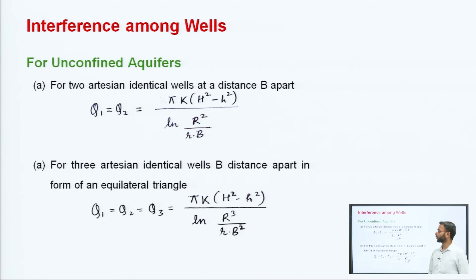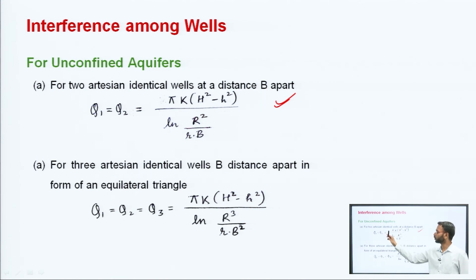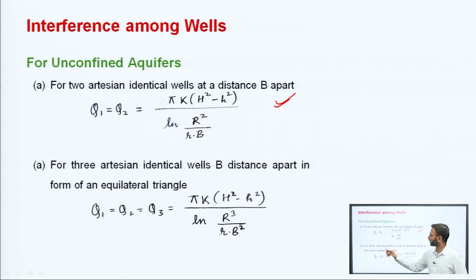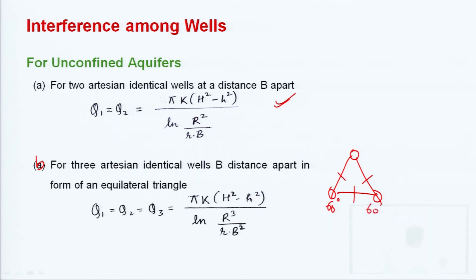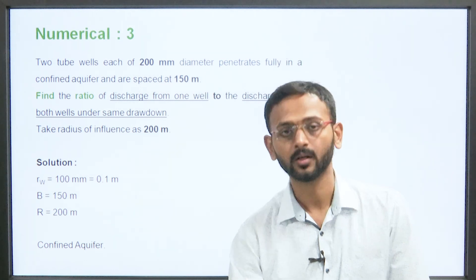Now let us talk about the unconfined aquifer. For two identical wells at distance b apart in an unconfined aquifer, q1 equals q2, given by: q = πk(H² − h²) / ln(R² / (r × b)). For three identical artesian wells in equilateral triangle arrangement at distance b apart, the formula uses R cubed upon r times b squared. We have discussed formulas for both confined and unconfined aquifers, for two and three well arrangements.